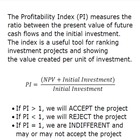Our decision criteria is pretty straightforward. If the PI is greater than 1, we'll accept the project. If the PI is less than 1, we'll reject the project. And in those circumstances where the PI is equal to 1, we can say that we're indifferent and we may or may not accept the project. Generally we agree that the higher the profitability index is, the more attractive the project is to the firm.